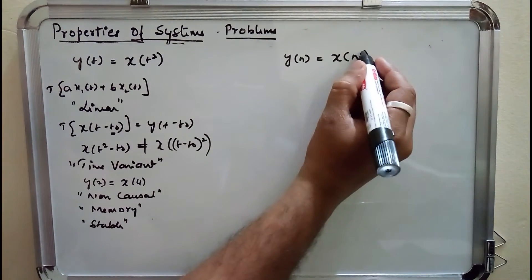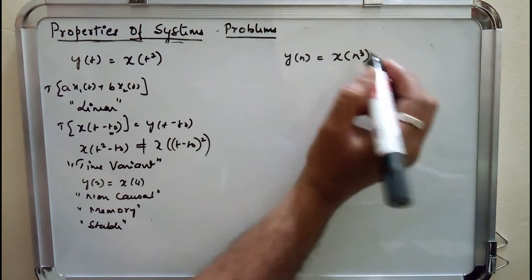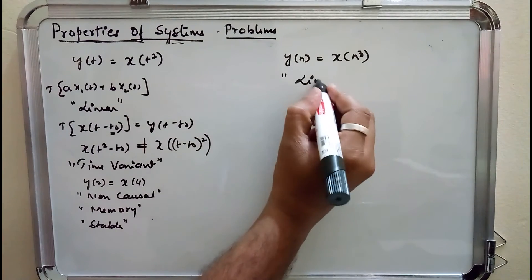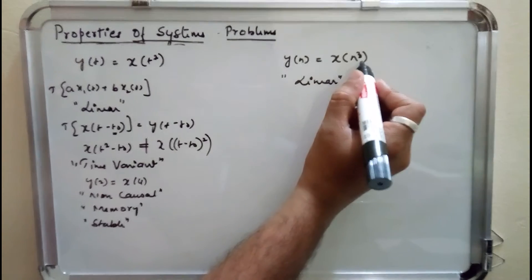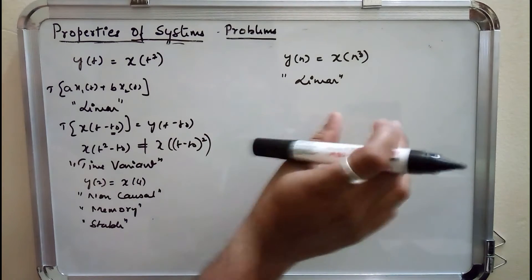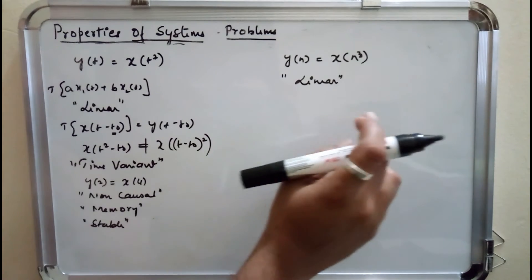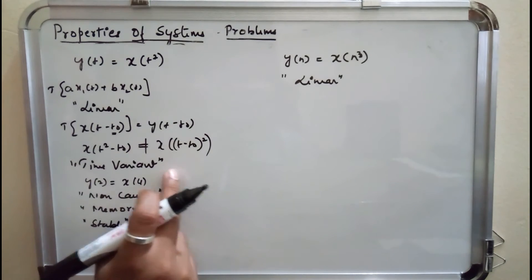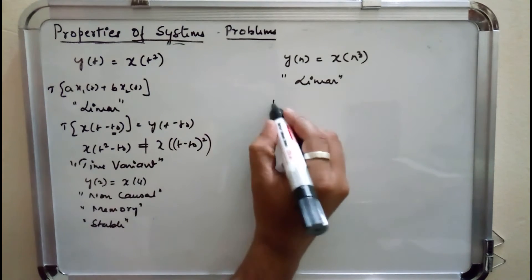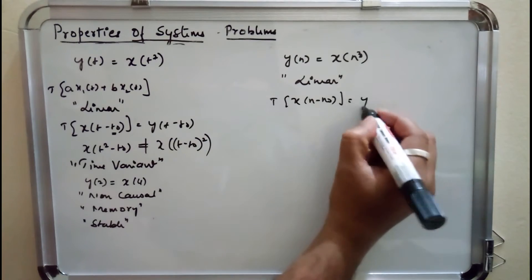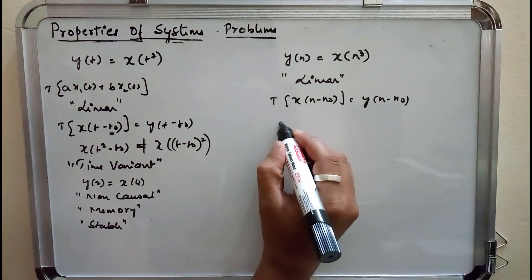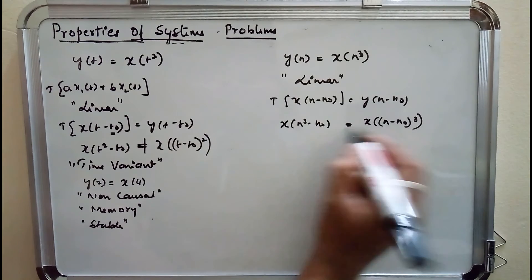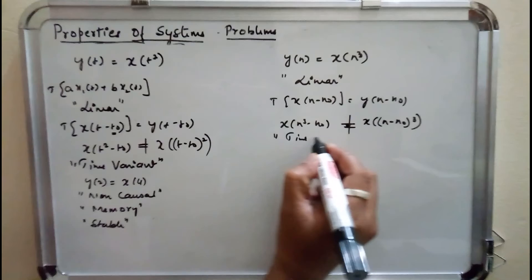The fourth problem is a discrete system where y(n) = x(n³). If I substitute a weighted sum of two signals, I get a·x1(n³) + b·x2(n³) = a·y1(n) + b·y2(n), so it is a linear system. For time invariance, a shift in the input gives x(n³ − n₀), whereas a shift in the output gives x((n − n₀)³). These two are not equal, so it is time variant.